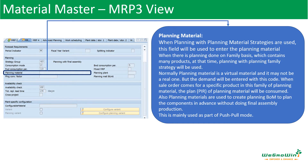In SAP, there is a field called 'planning material.' When planning with a planning material strategy, this field is used to enter the planning material. The planning material is a virtual material — it may not be a real one. The demand will be entered for this planning material. Materials like TP1, TP2, and TP3 are linked with this planning material in the MRP3 view. When you receive a sales order for TP1, TP2, or TP3, they will consume the plan of this toothpaste planning material.